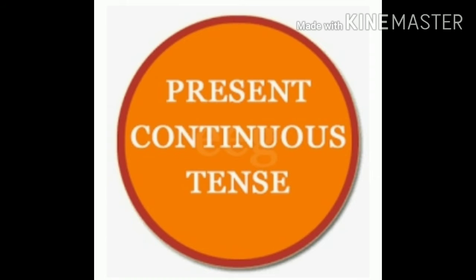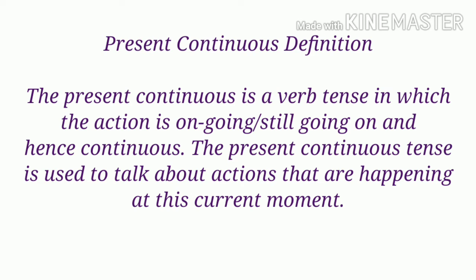Now, students, let's continue with the second part: the present continuous tense. The present continuous is a verb tense in which the action is ongoing or still going on — and hence 'continuous.' The present continuous tense is used to talk about actions that are happening at this current moment, that is, happening right now.